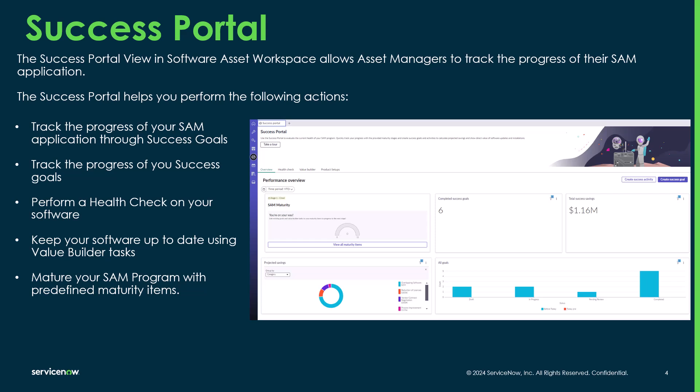The Success Portal in Software Asset Workspace allows the asset managers to track the progress of their SAM application. It helps you track the progress of your applications through using success goals, and you can also track the progress of those success goals as you progress through them. On the Success Portal, you can also perform a health check on your software configurations, and we'll talk more in detail about that in the health check video.